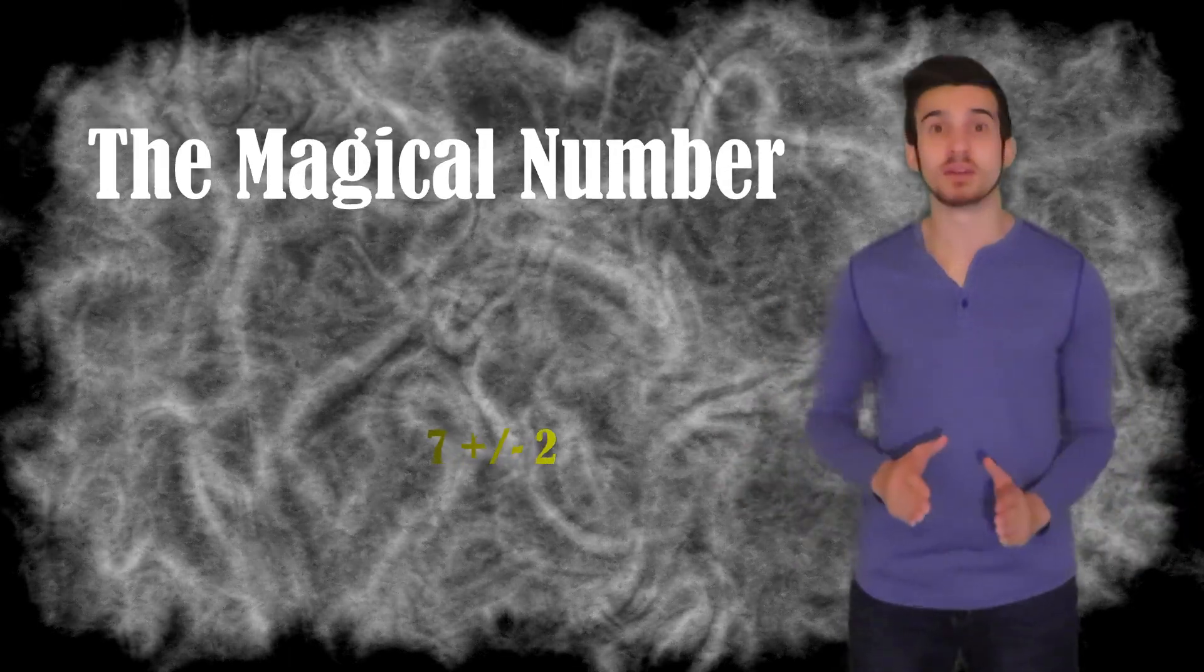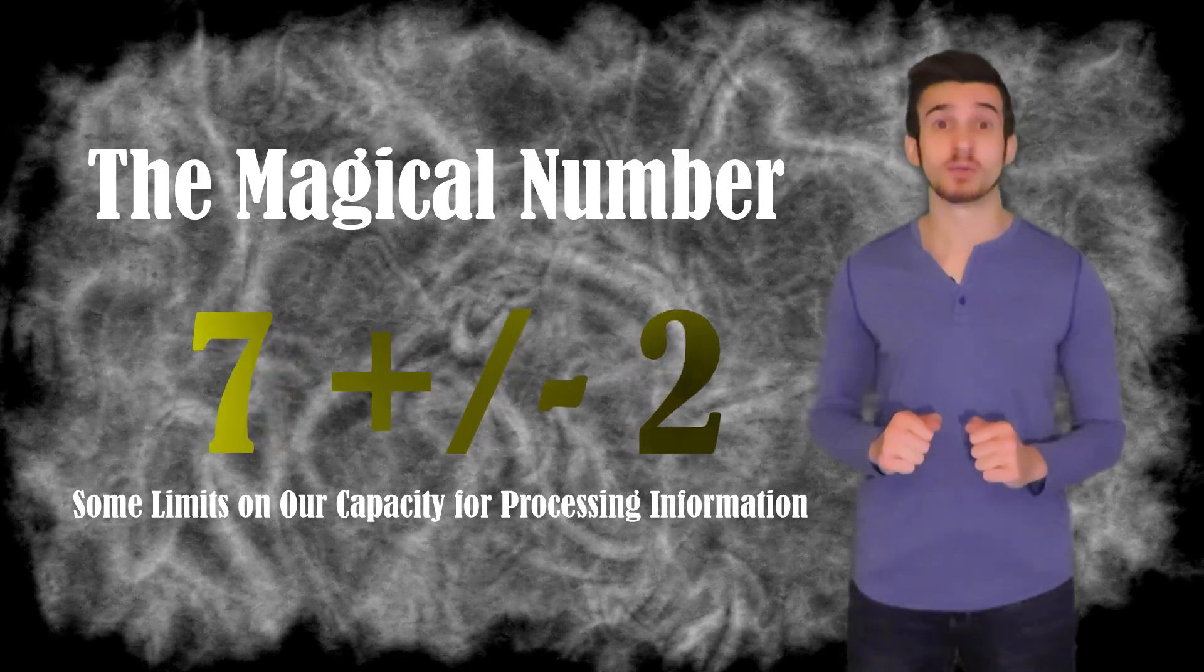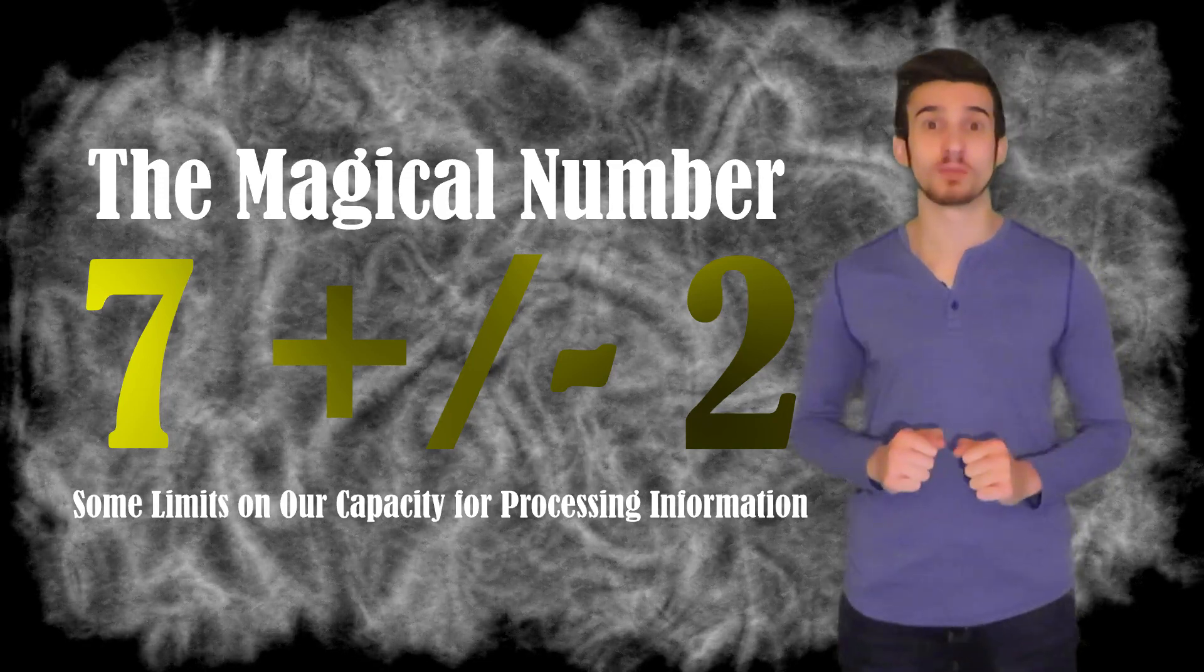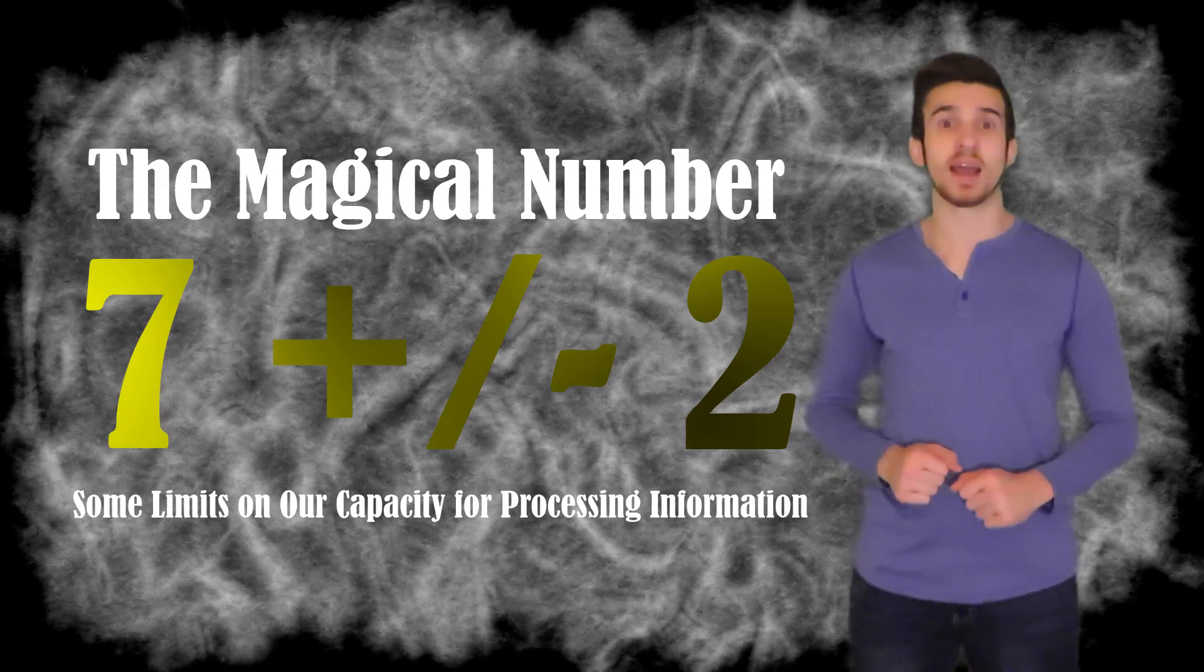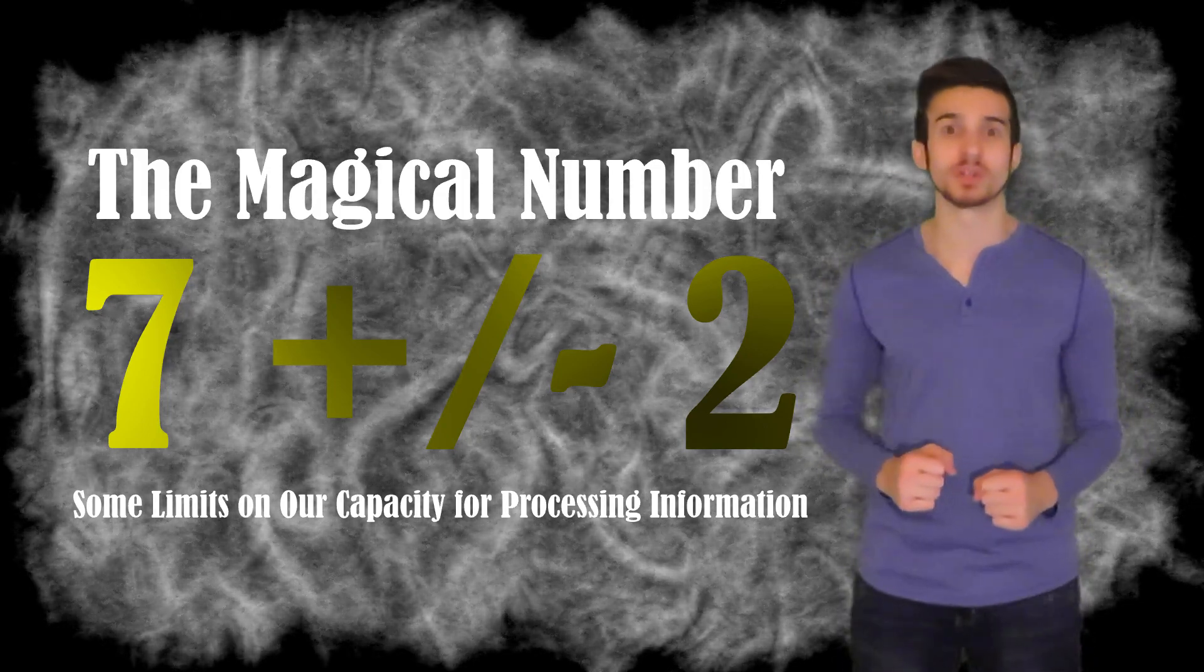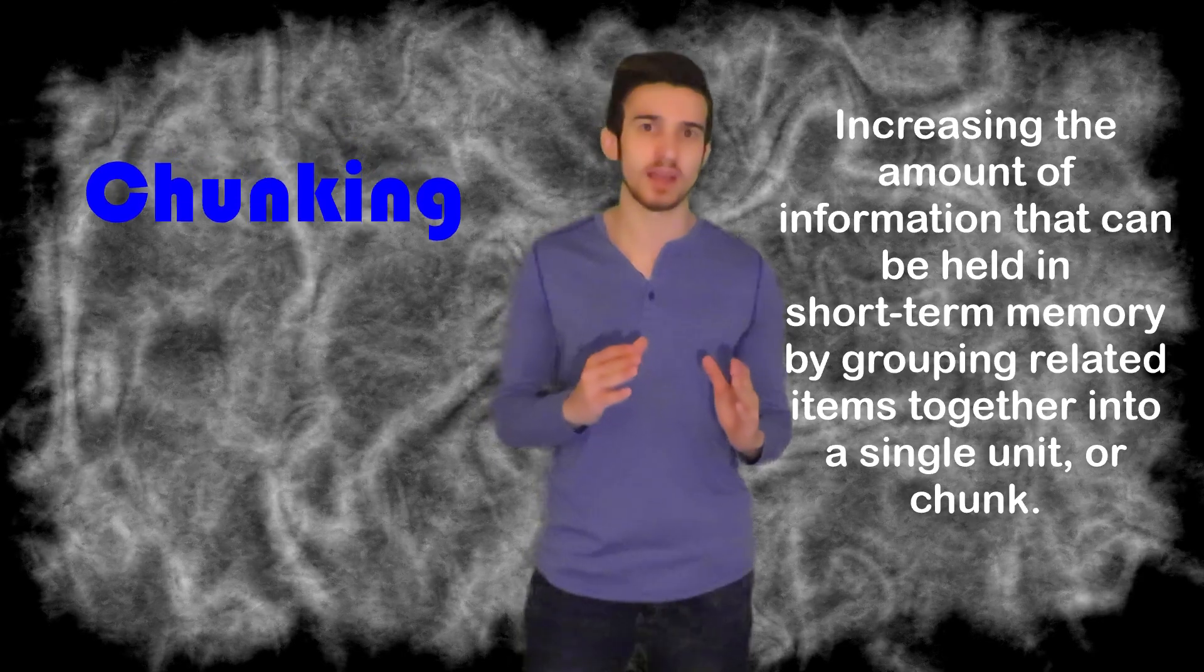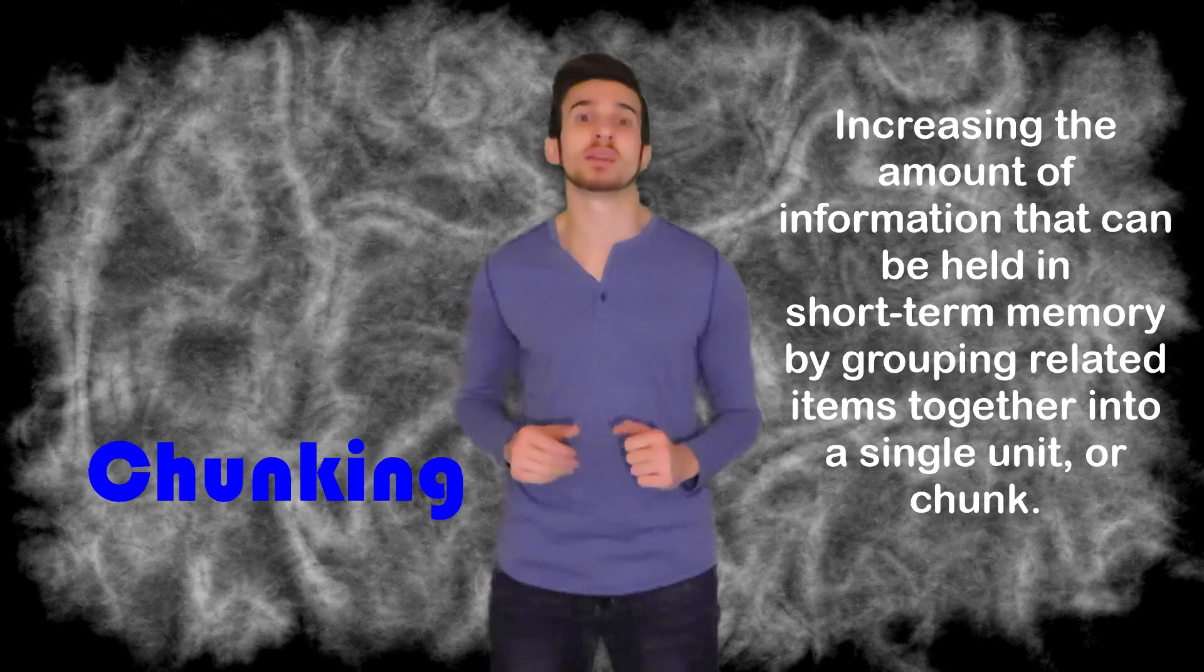The magical number seven plus or minus two, some limits on our capacity for processing information, published by George Miller in 1956, is going to be one of the most sourced psychological publications today. Miller's research argues that our short-term memory has the capacity of seven plus or minus two units, so anywhere from five to nine items can be retained within our short-term memory. We are not solely limited to this number, however. Miller found that we have the cognitive ability to chunk information together, or a process known as chunking, in order to retain more information within our short-term memory.